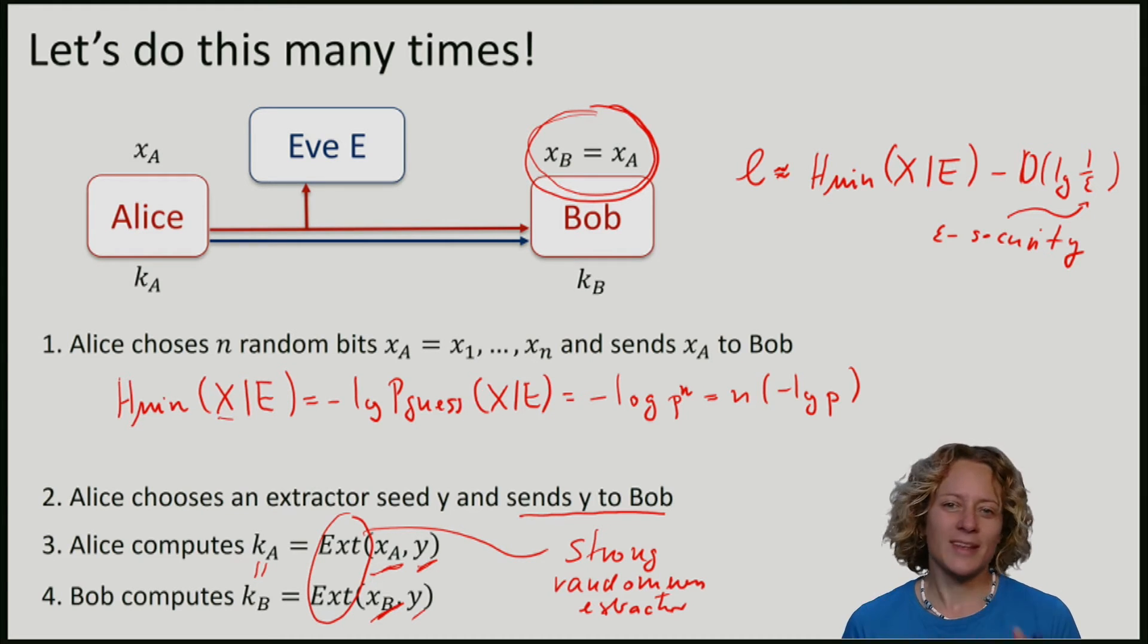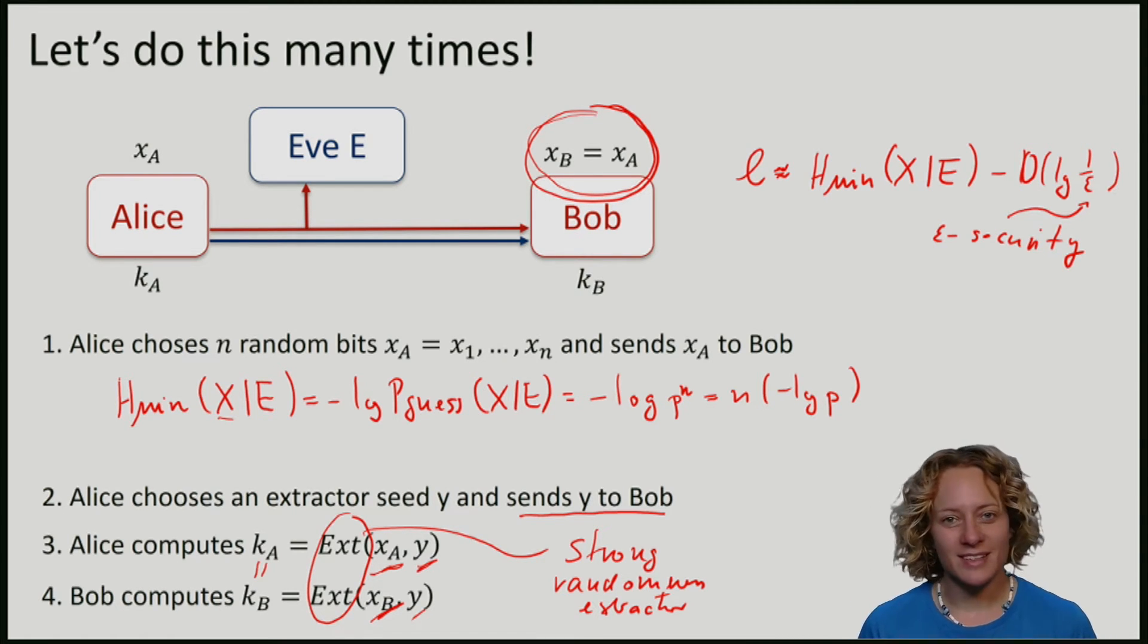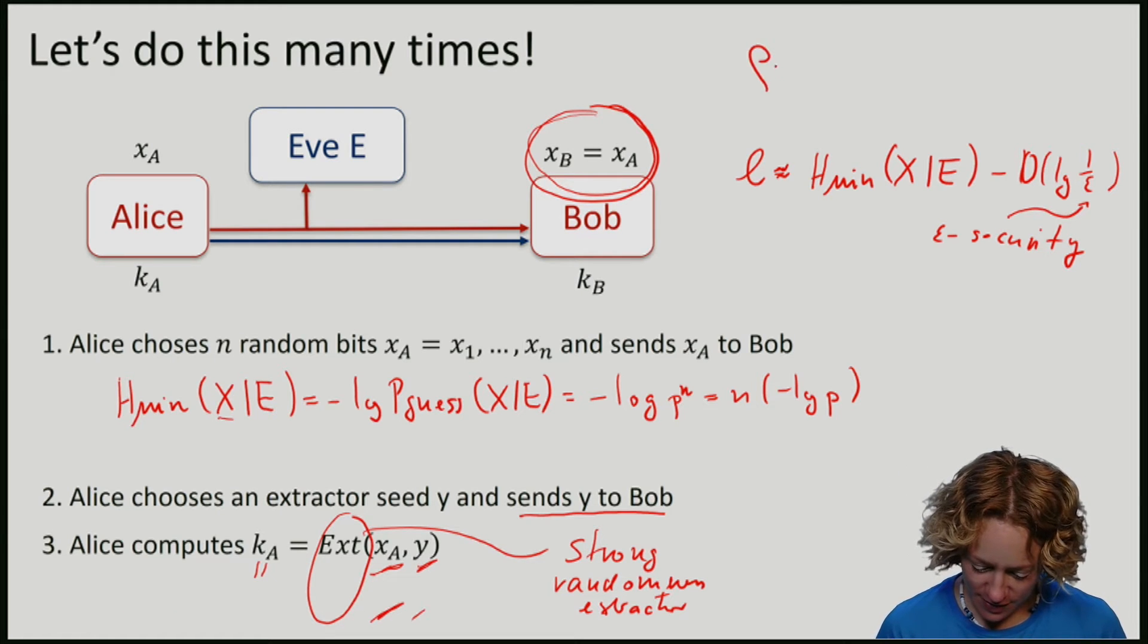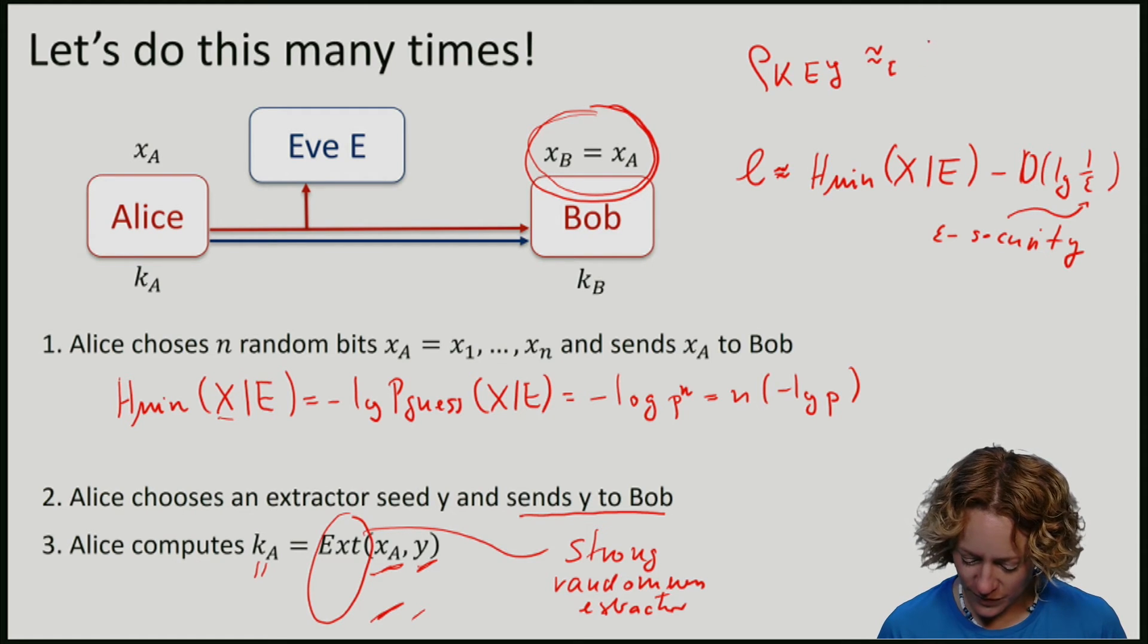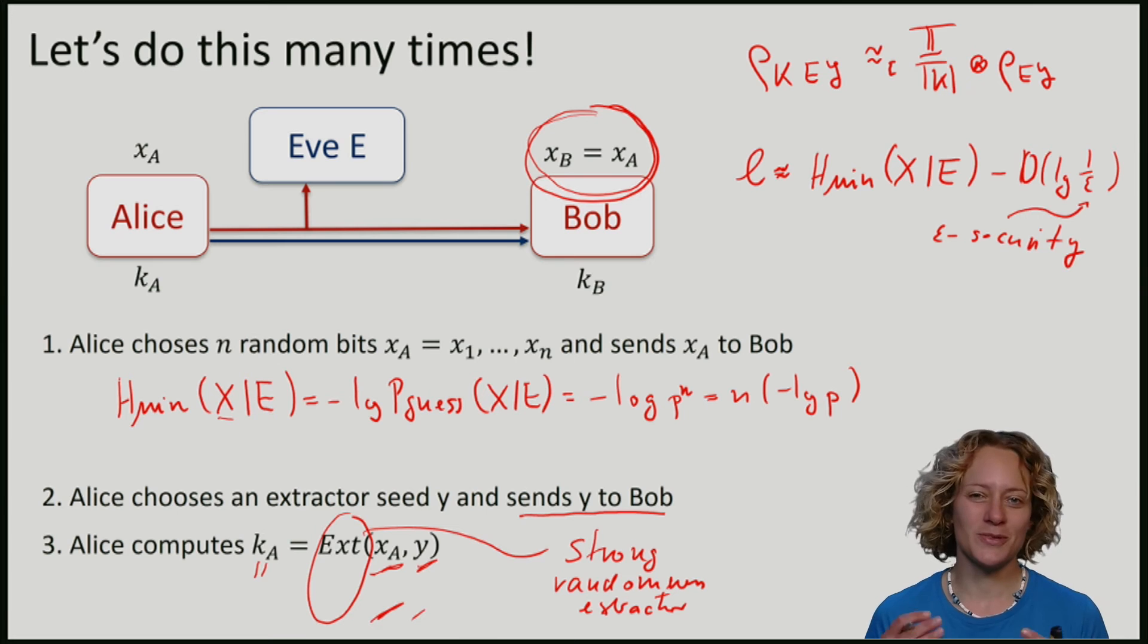And strong randomness extractors have the property that even if I know the seed y, then nevertheless the outcome, this is the key k that we produce given e and the extractor, will be close to being uniform on k and uncorrelated from both e and y. So it's perfectly fine for us to give the extractor seed to Eve.